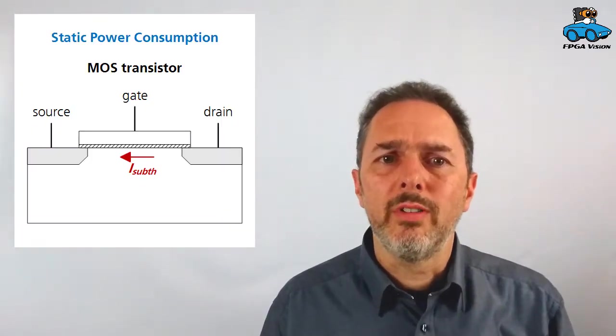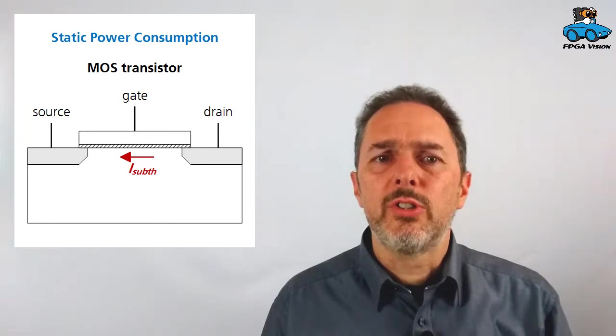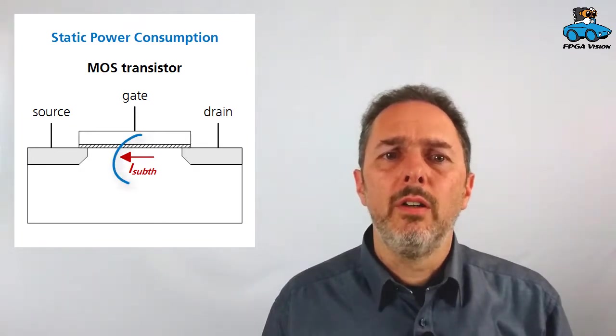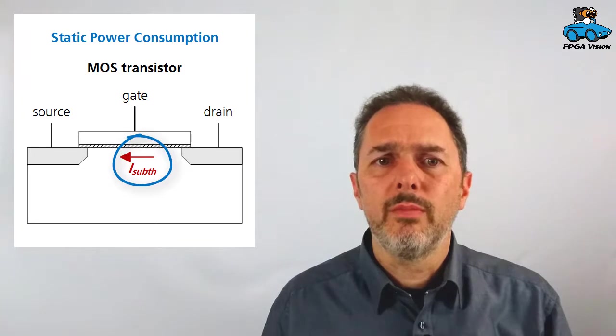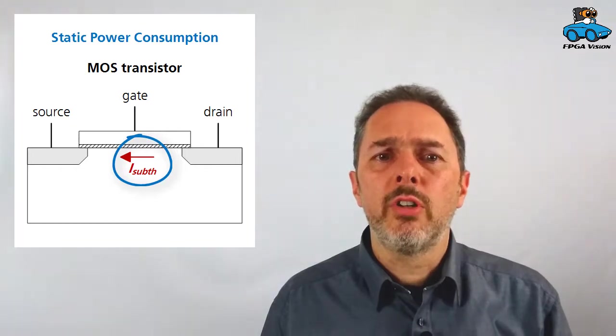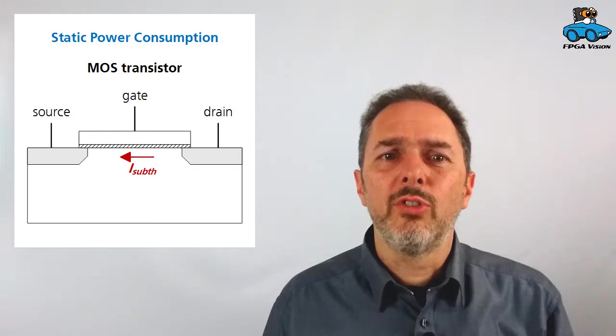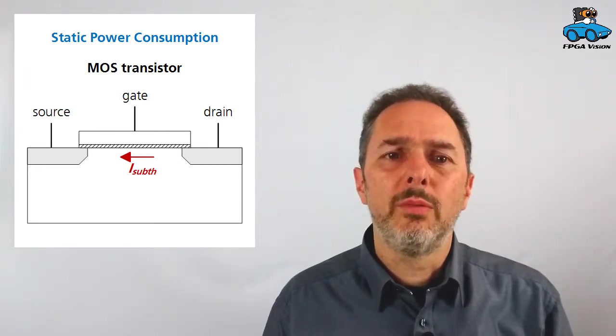In the operation of this circuit, you can distinguish between two different power consumptions: static power consumption and dynamic power consumption. To understand static power consumption, let's look at the MOS transistor which is depicted here. When the MOS transistor is switched off, there is still a very small current flowing between drain and source. Although this current is very small, in a large modern digital circuit you have over a billion transistors, so all these small currents add up to a significant power consumption.